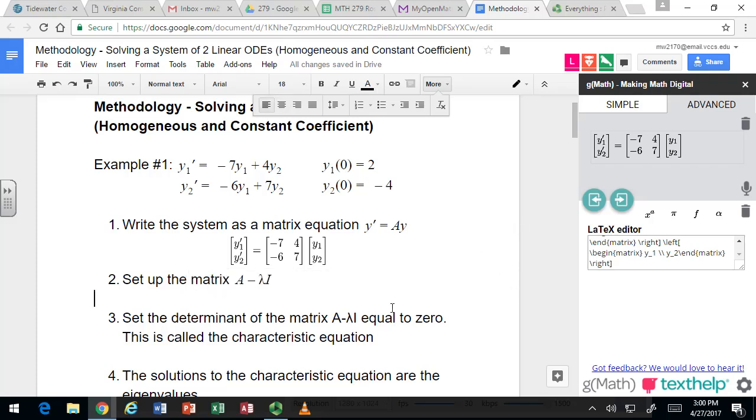There's a lot of why questions that come up when we take this next approach. I refer you to the critical thinking questions to answer most of those. Post in the discussion forum if you still have questions. We're now going to set up a matrix related to A. The matrix A here, -7, 4, -6, 7.